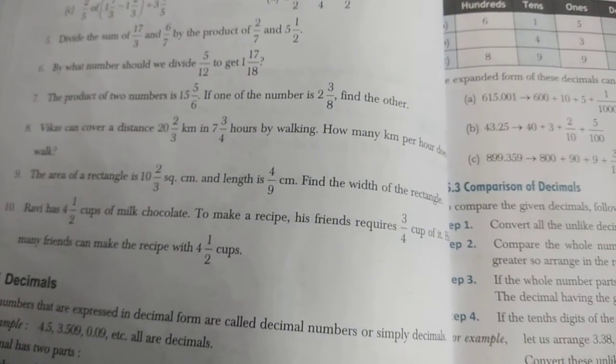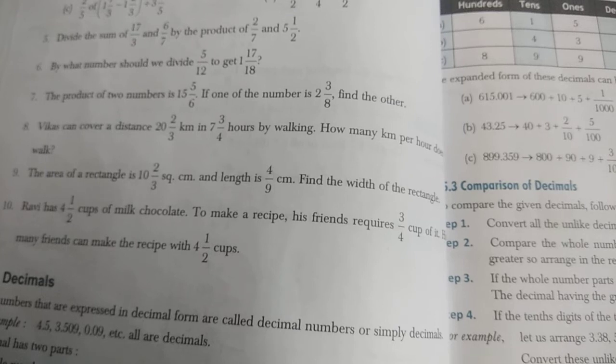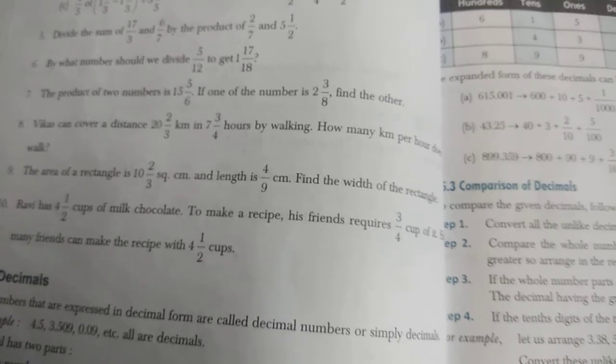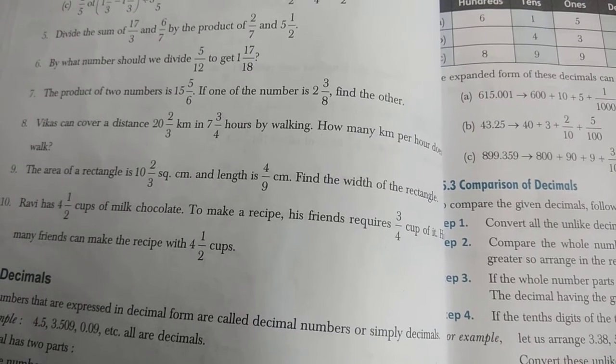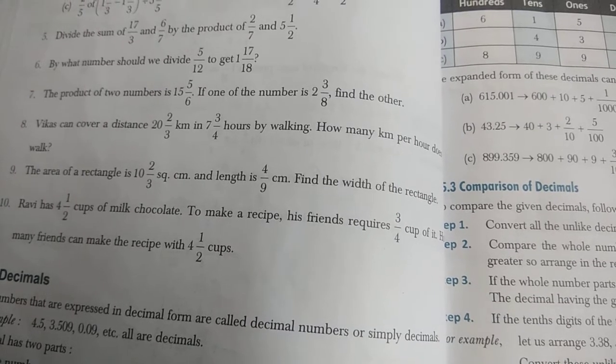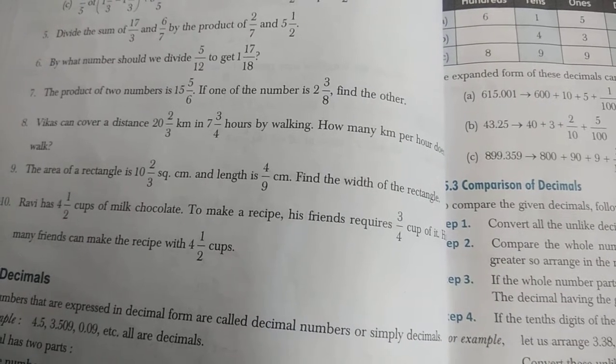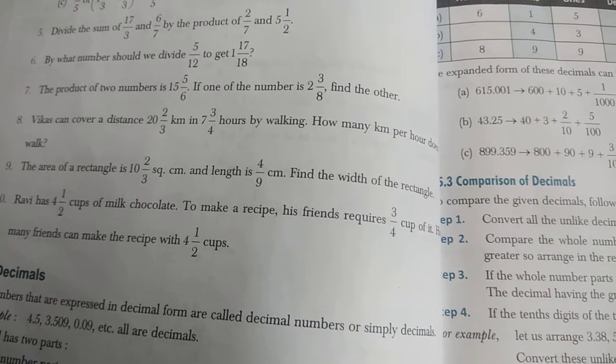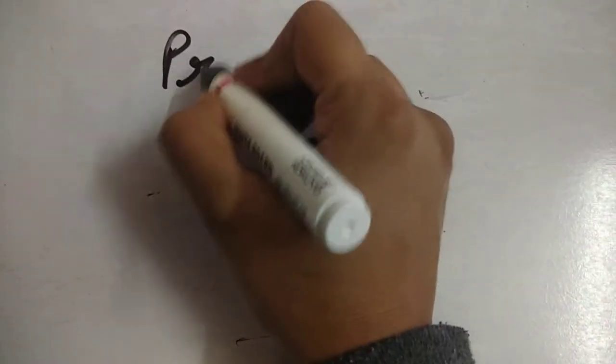The product of two numbers is 15 and 5/6. One number is given, so we have to find the other number. The product of two numbers equals 15 and 5/6, and the first number is given, so we need to find another number.